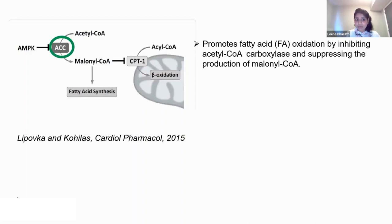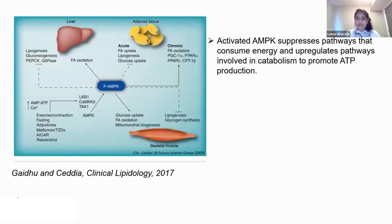Apart from activating catabolic processes, AMPK is also important in preventing fatty acid synthesis. AMPK inhibits an enzyme called ACC (acetyl-CoA carboxylase), which converts acetyl-CoA to malonyl-CoA and promotes fatty acid synthesis. When AMPK inhibits ACC, fatty acid synthesis is reduced — this is beneficial because aging is associated with excess fat accumulation, which drives insulin resistance.